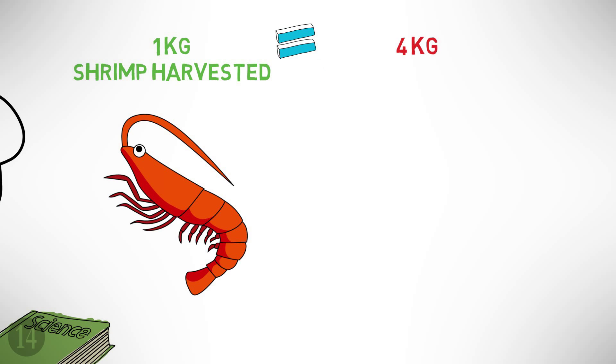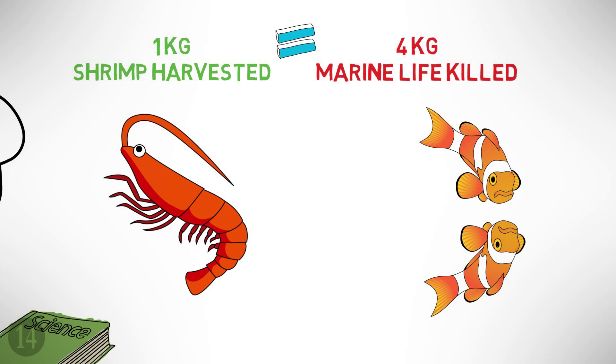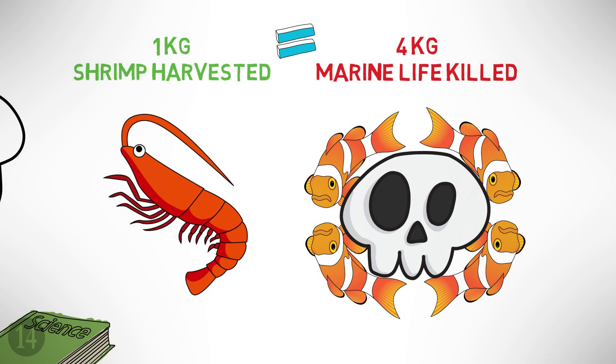Number fourteen: for every kilogram of shrimp harvested, about four kilograms of fish and other marine creatures are destroyed.